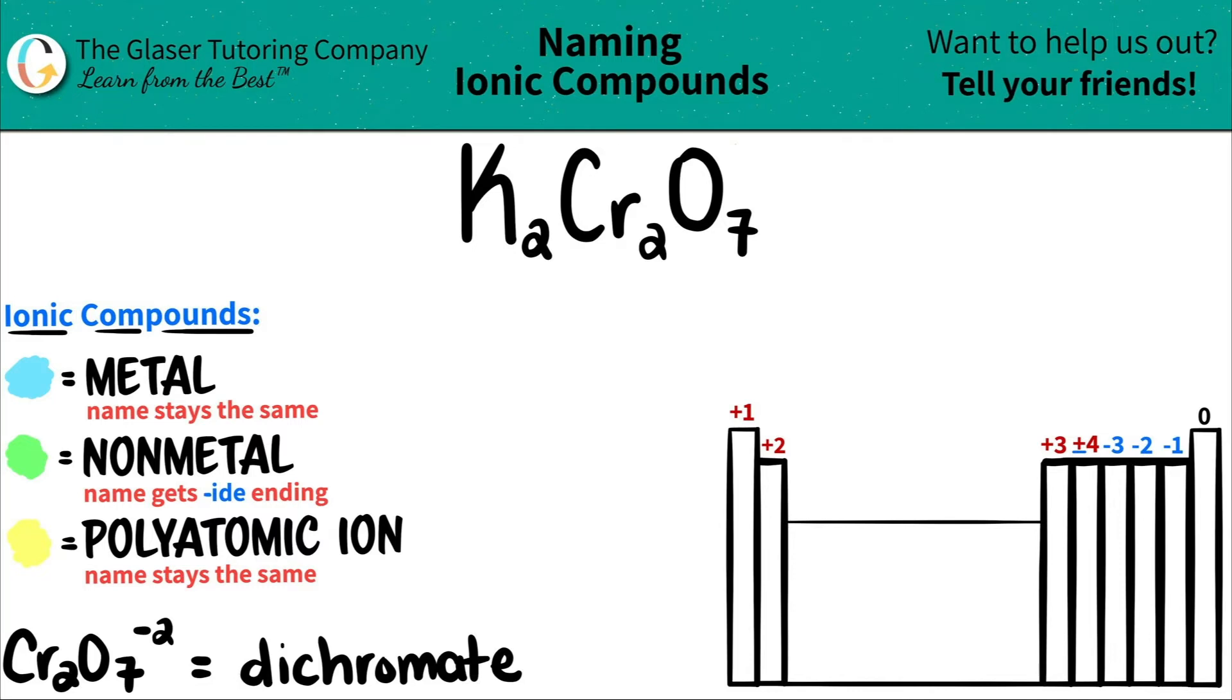Today we are going to be naming the ionic compound K2Cr2O7. Now here's a little trick. If you see that you have three or more different elements in your compound, you know you're dealing with at least one polyatomic ion.